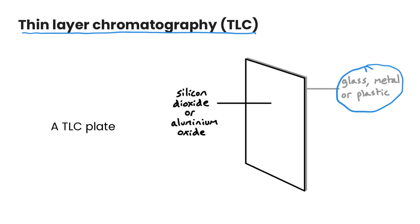It's coated with a very thin layer of either SiO2, which is silicon dioxide, also called silica, or it could be coated with aluminum oxide, so Al2O3, which is also known as alumina.